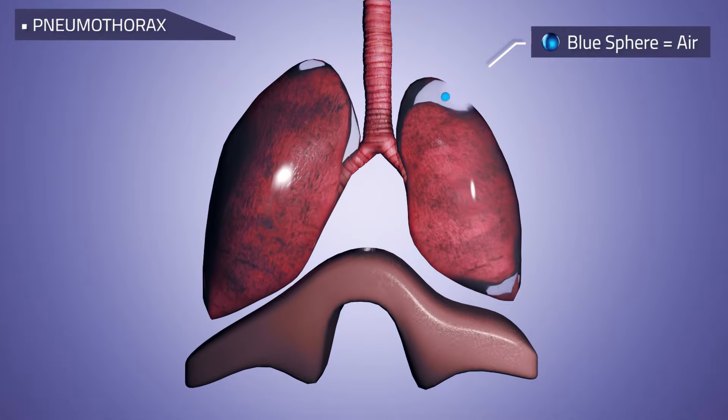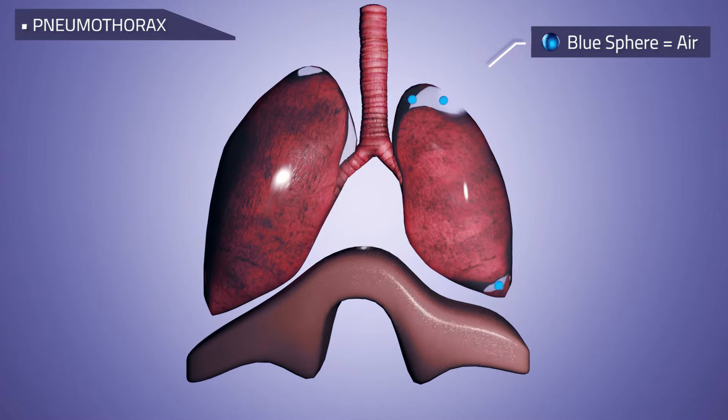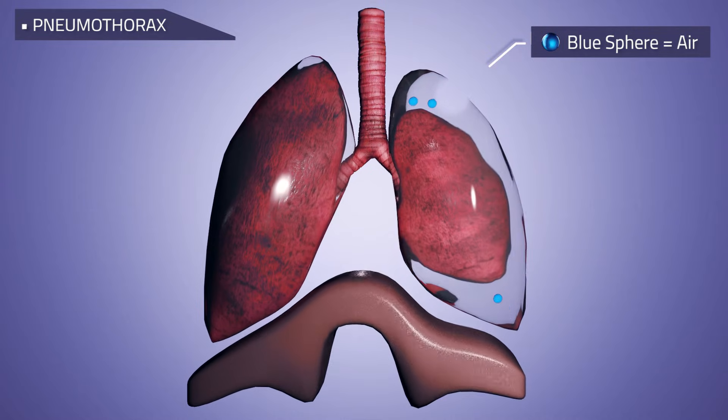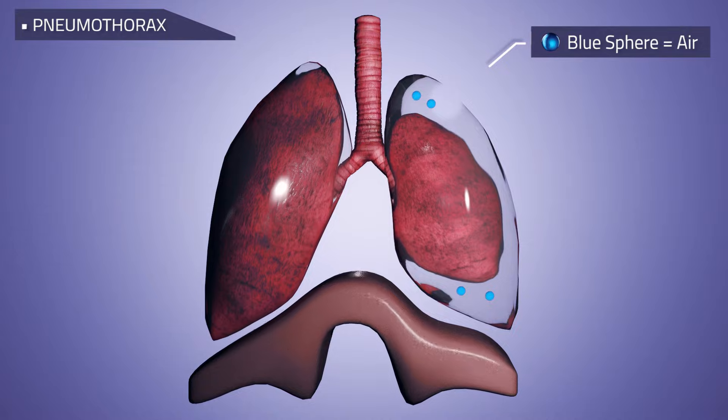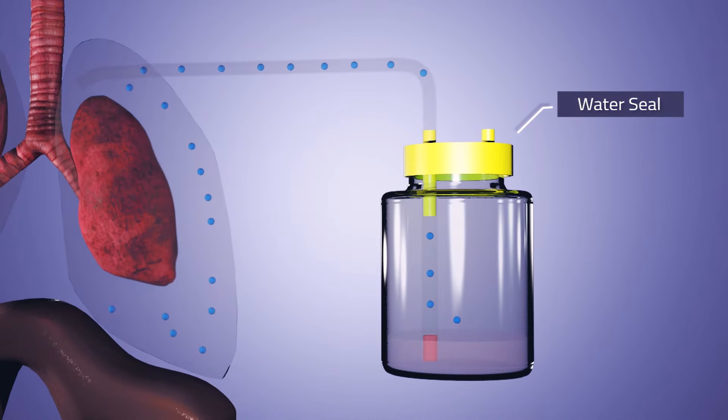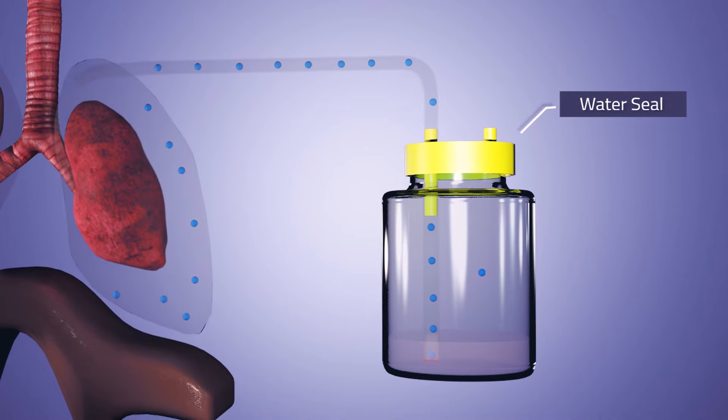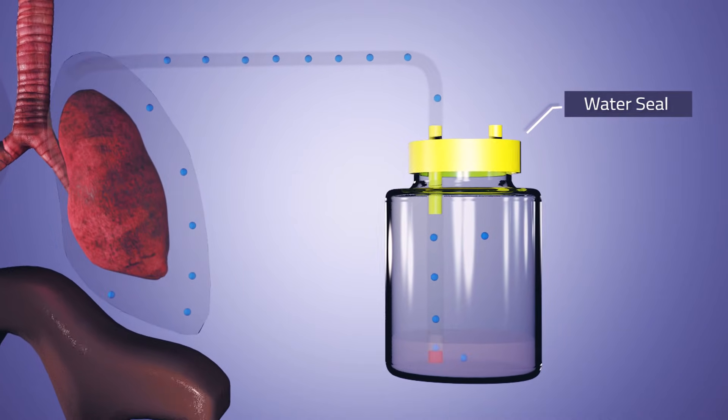The connection between the visceral and parietal pleura is lost and the diaphragm can no longer control the lung movements, making breathing difficult. To re-establish normal lung functioning, it is necessary to re-establish the negative pressure by removing air from the pleural space. The most common way to do this is to place a chest drain inside the space and connect it to a bottle with water seal.